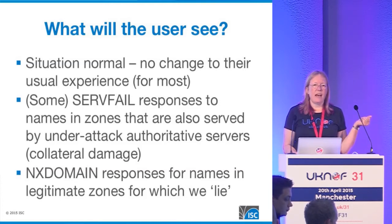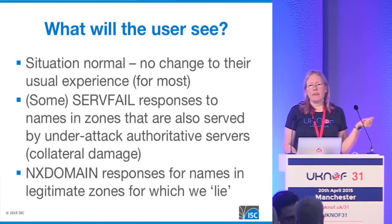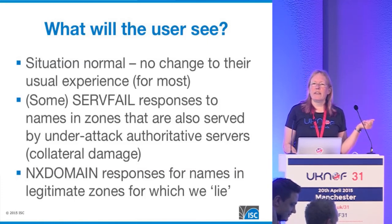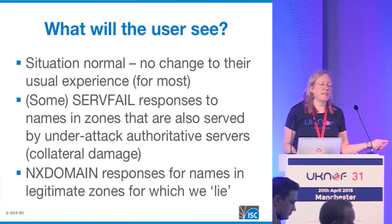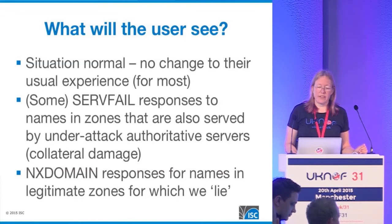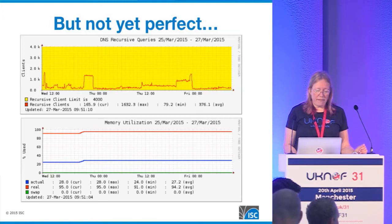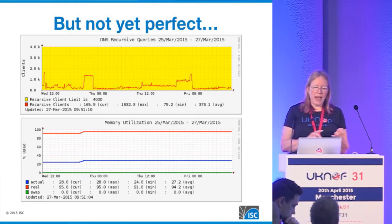What will the user see? The objective is to have situation normal — you want anybody sending queries to the server to get responses as they would expect, especially for other domains that are not under attack. There might be some SERVFAIL responses, particularly where a server under attack is hosting not just the domain under attack but other domains. And if you've chosen the lying technique — configuring yourself authoritative for a domain you know is under attack — then there will be NX domain responses going back to legitimate queries. But this is not yet perfect, and we're still thinking about it.